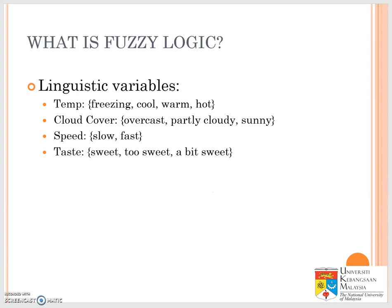Another example is temperature — it's freezing today, or it's cool, or I feel warm, or it's very hot. Different people have different values for this. Similarly with cloud cover: if it's overcast, or partly cloudy, or it's sunny — meaning there are not many clouds. Speed: slow, medium, fast, and so on. And taste: sweet, too sweet, a bit sweet, or maybe hot and spicy. These are all uncertain.